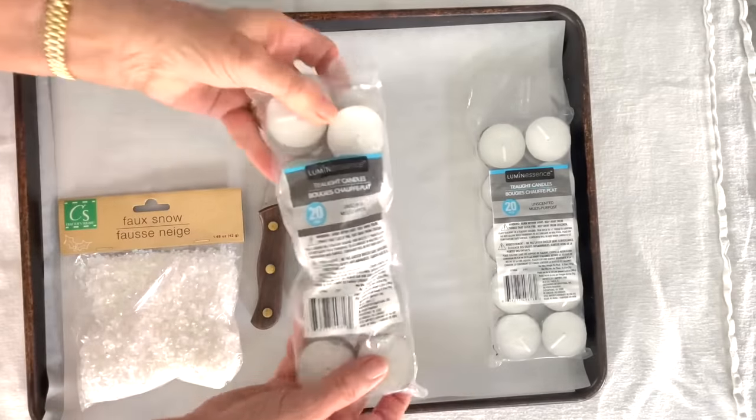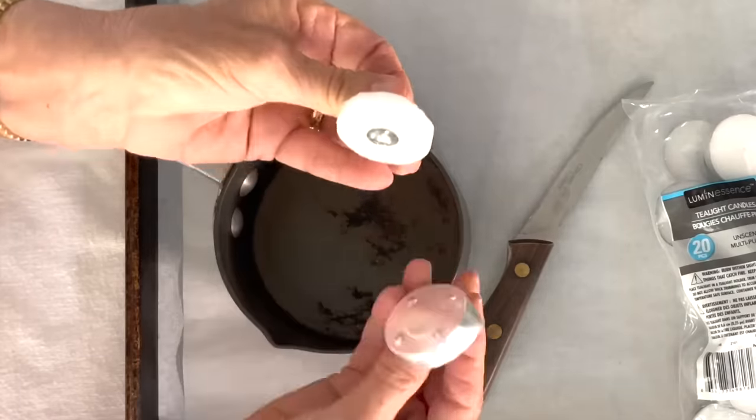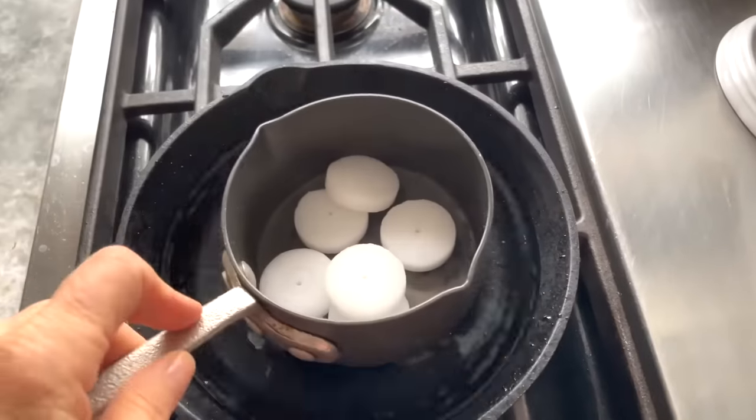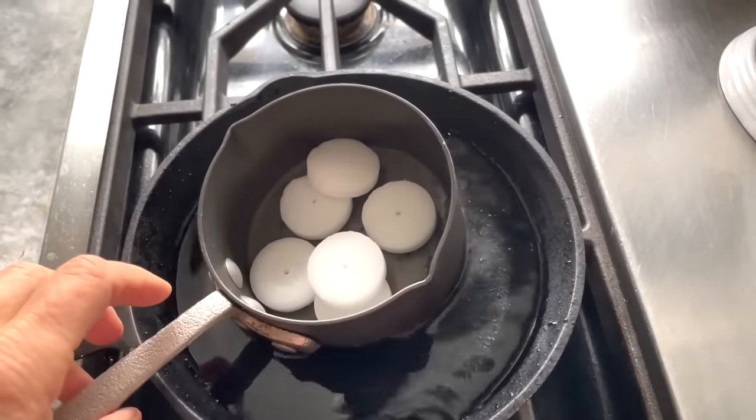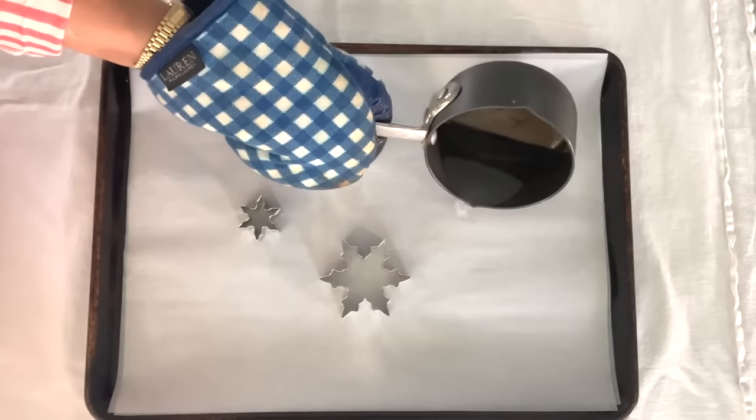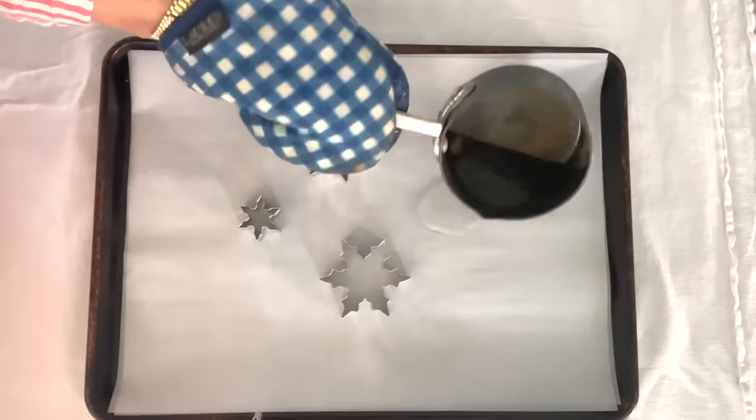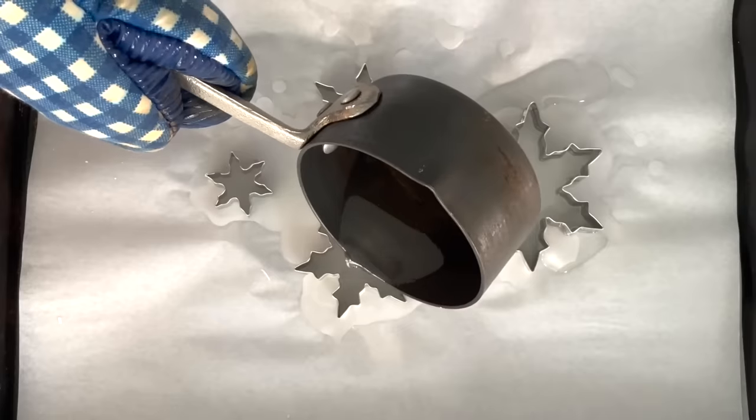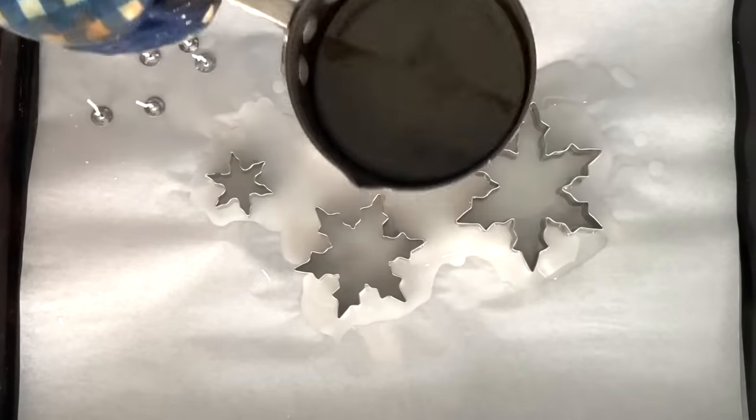Open the tea light package and remove your tea lights. Pull gently on the wick. Place as many tea lights as you think you need in the saucepan and bring the water to a boil. Pour enough wax on the parchment paper to surround your cookie cutter and then set your cookie cutter on the wax and press down. Fill in the cookie cutters almost to the very top.